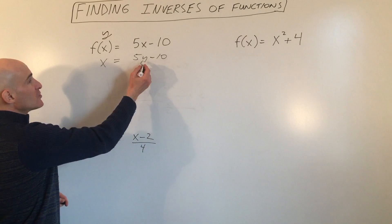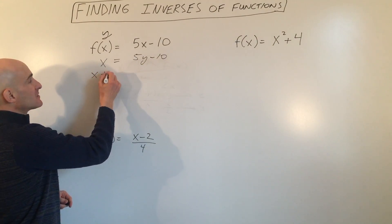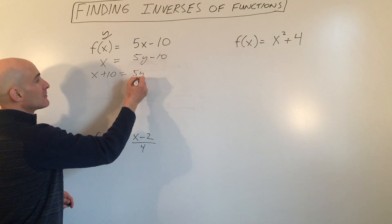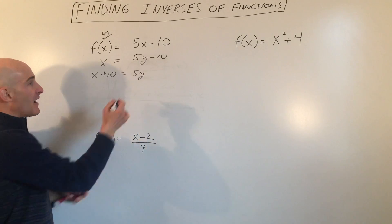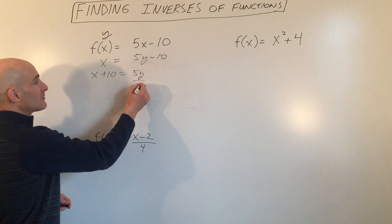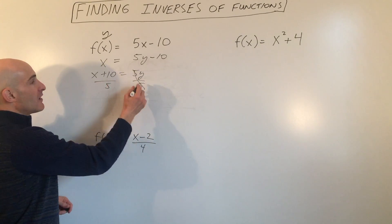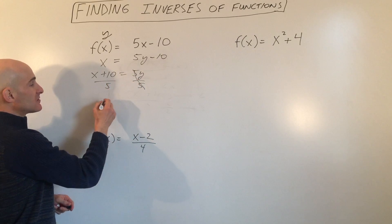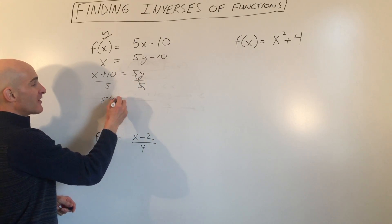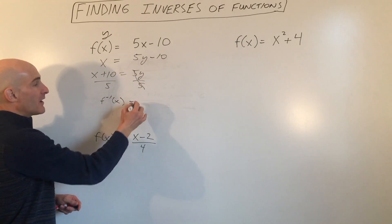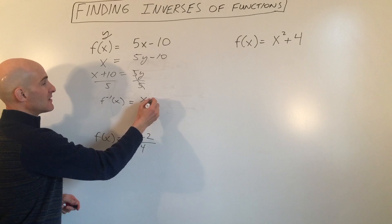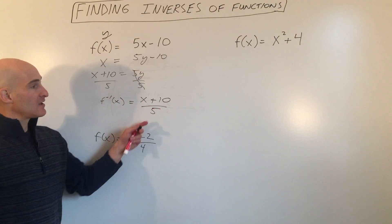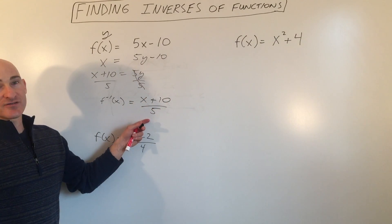To do that, we're going to add 10 to both sides, then divide by 5. Now you have y equals — or we could say f inverse of x instead of y — equals x plus 10 over 5. This is our inverse function.